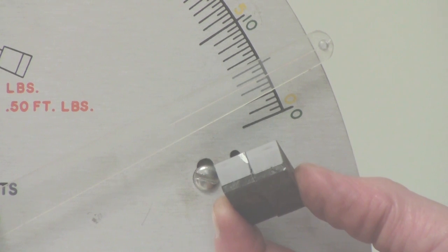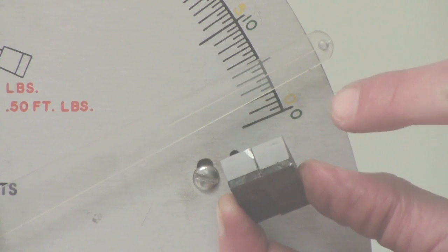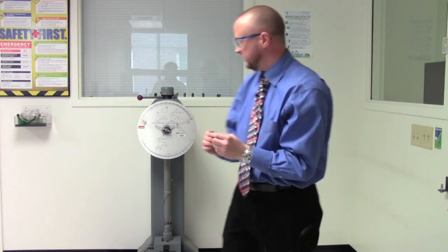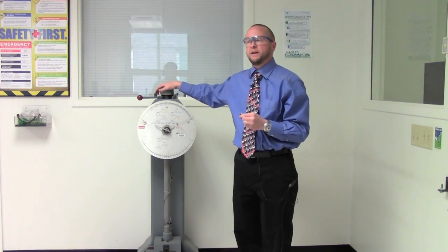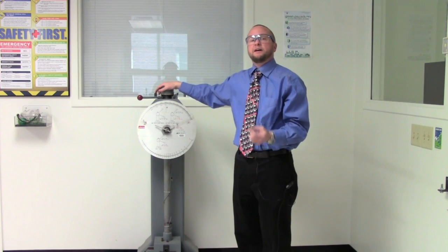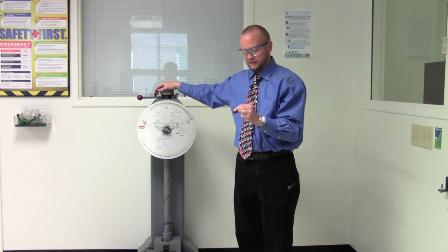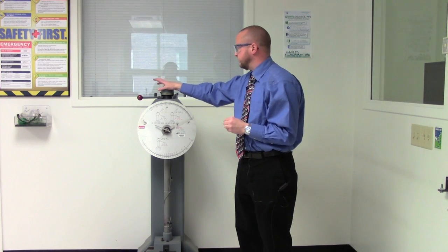This is not how we want our metal to perform. We want the metal to absorb a lot of energy before it actually fails. And this is what the Charpy impact test gives us, a way to quickly quantify how much energy a piece of metal is going to absorb.